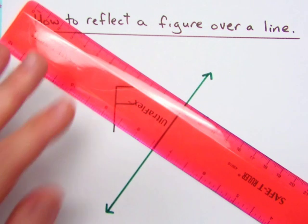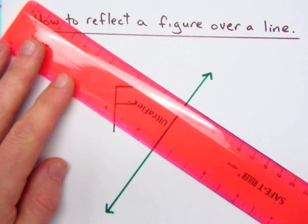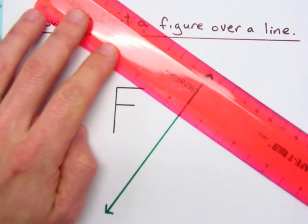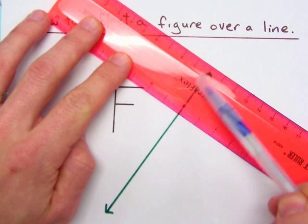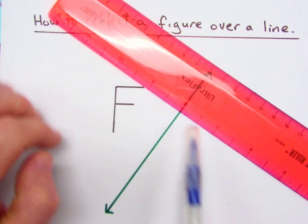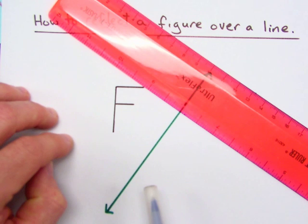Okay, so what we're going to do is use the ruler to create some perpendicular lines here. So you want to line up one of those hash marks with the line of reflection, and now I know that my ruler is perpendicular to the line of reflection.